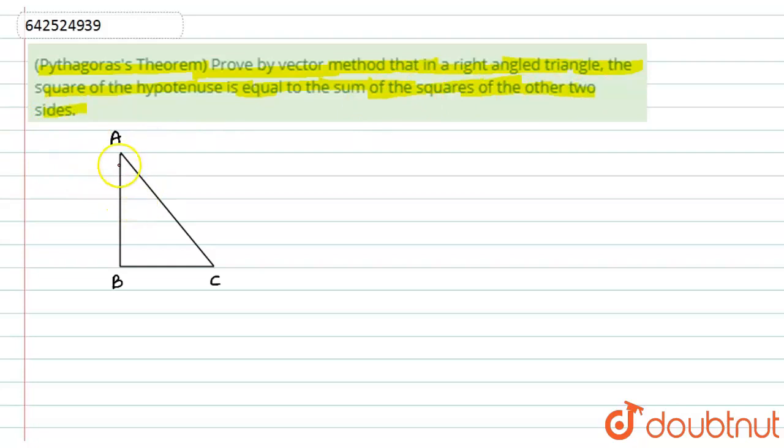First of all, here we have given this is a right angle triangle. In that right angle triangle, this is vector A, this is vector B, and this is vector C. So let us start with the vector.